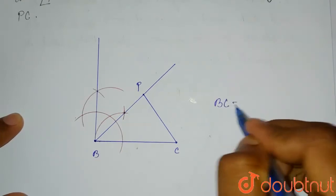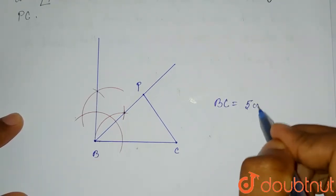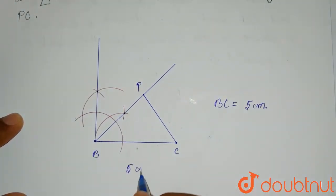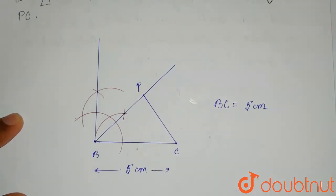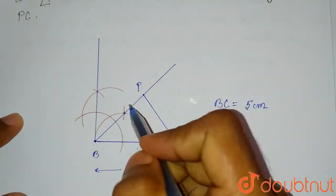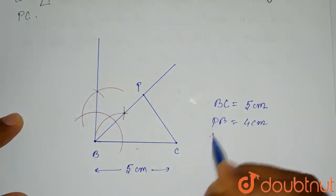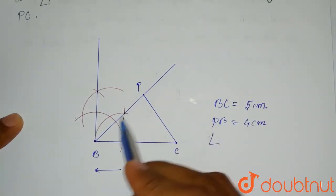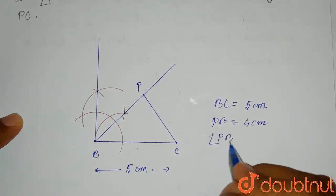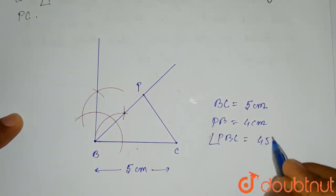So here BC equals to how much? 5 centimeters. And PB is 4 centimeters. And the angle, that means angle PBC is how much? 45 degrees.